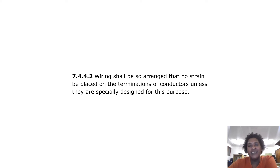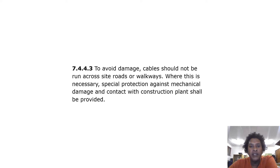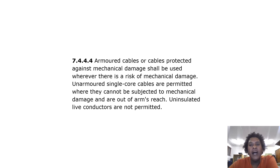Wiring. Wiring shall be so arranged that no strain be placed on the terminations of conductors unless they are specifically designed for this purpose. To avoid damage, cables should not be run across site roads or walkways. Where this is necessary, special protection against mechanical damage and contact with construction plant shall be provided. Armored cables or cables protected against mechanical damage shall be used wherever there is a risk of mechanical damage. Unarmored single core cables are permitted where they cannot be subjected to mechanical damage and are out of arms reach.